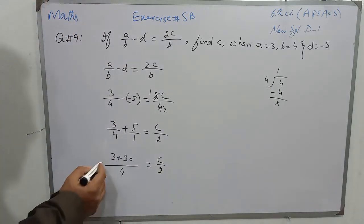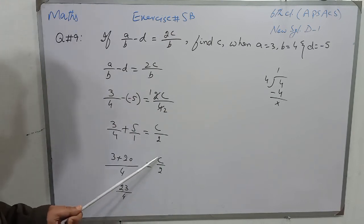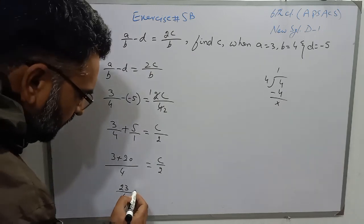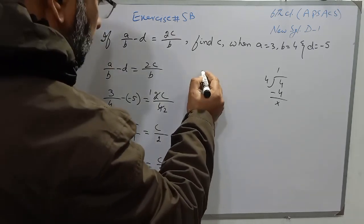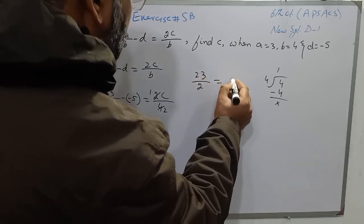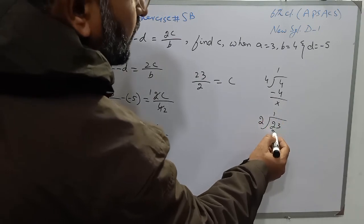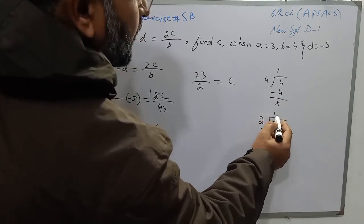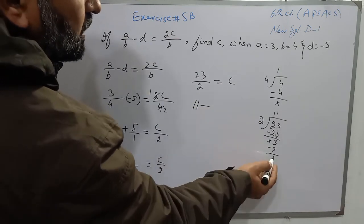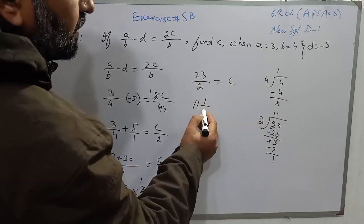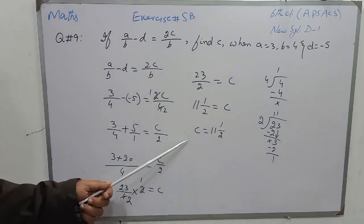Sum up 3 plus 20 to get 23, so it is 23 over 4. This 2 is dividing on the right side; when we transfer it to the left side it will multiply: 23 over 4 multiplied by 2 is equal to C. 2 ones are 2 and 2 twos are 4, giving 23 over 2 is equal to C. Now divide 23 by 2 to convert to a mixed number: 2 elevens are 22, subtract 22 from 23, remainder is 1. Quotient 11 is the whole number, remainder 1 is the numerator, and divisor 2 is the denominator. So C is equal to 11 whole number 1 over 2.